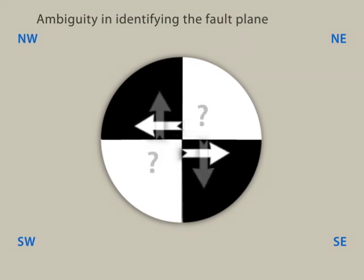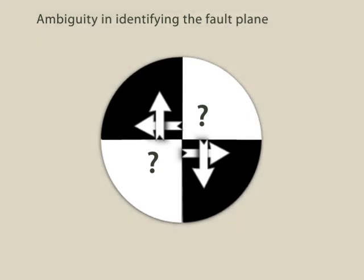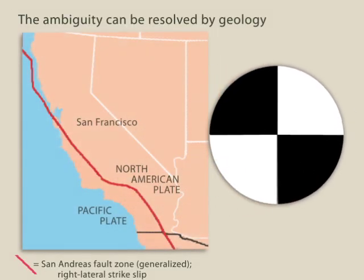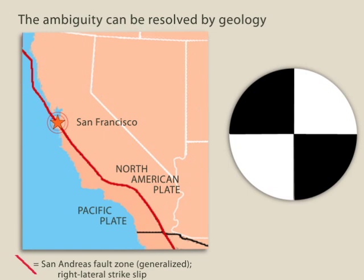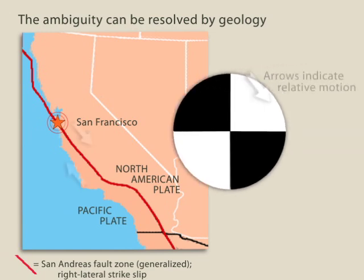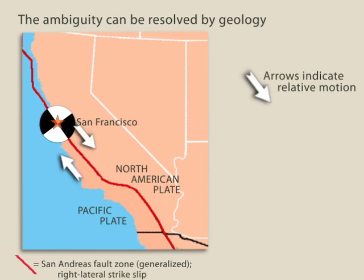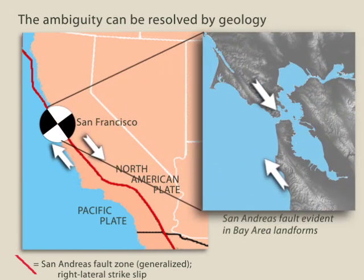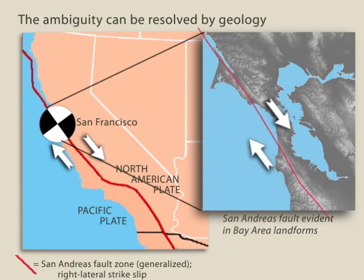Therefore, you must use geological knowledge of the region to decide which nodal plane is the fault plane. For example, if an earthquake with an epicenter on the San Andreas fault had a focal mechanism that looked like this, the most likely choice would be that the fault plane is oriented northwest to southeast, parallel to the strike of the fault we observe at the surface.